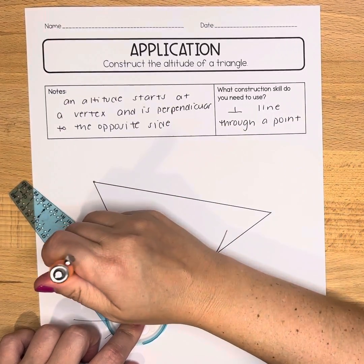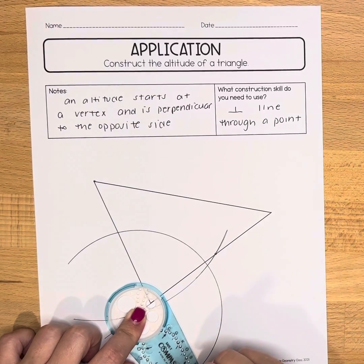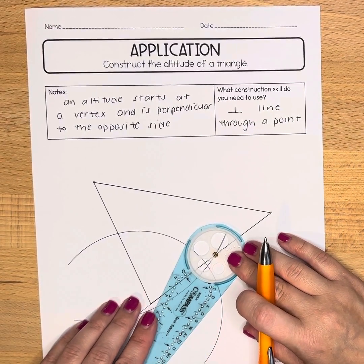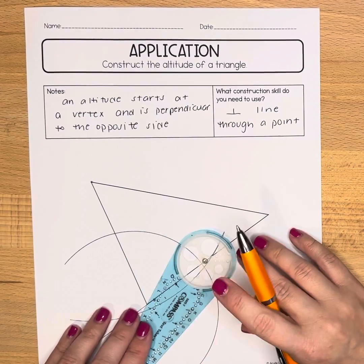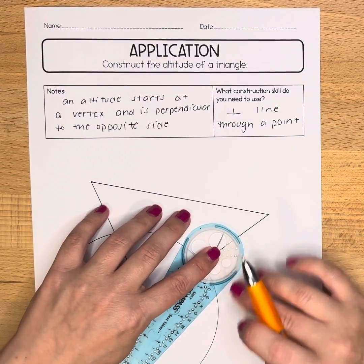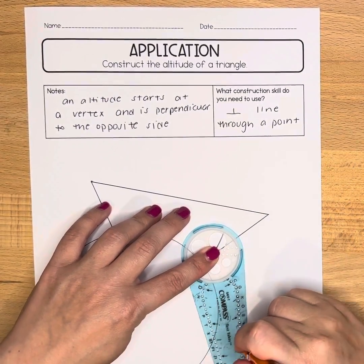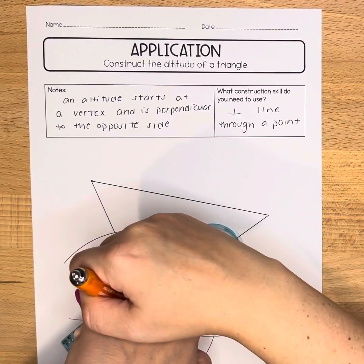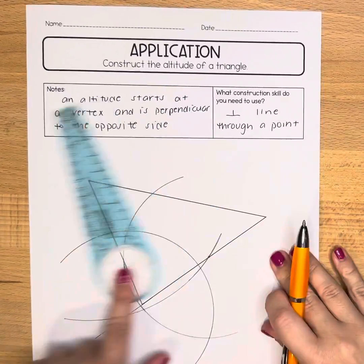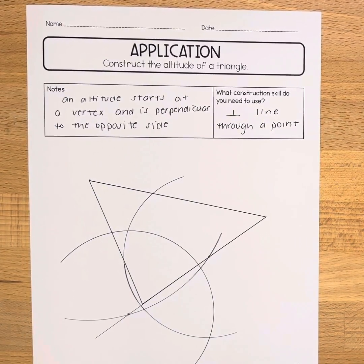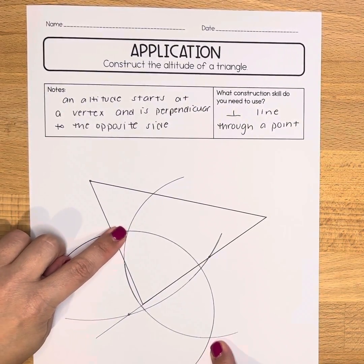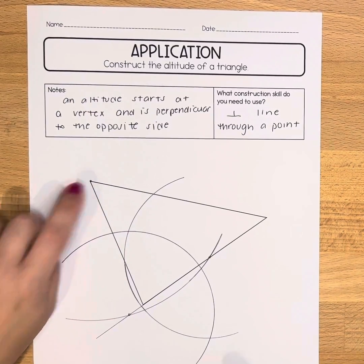You are going to make a nice big arc, and then you're going to put the starting point, that gold ring of your compass, on the other endpoint using that same measurement. We are going to make an arc in the opposite direction. Those two arcs should intersect twice. They should also be in line with our initial vertex.